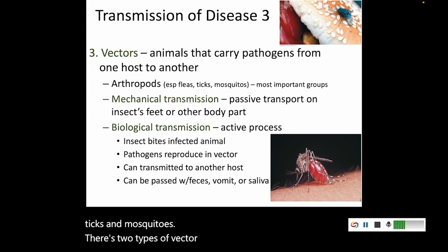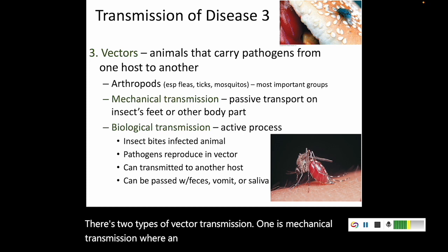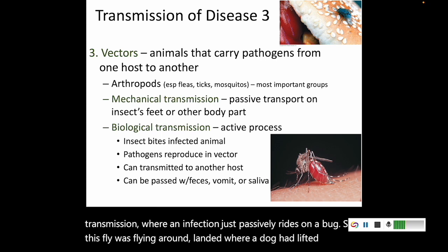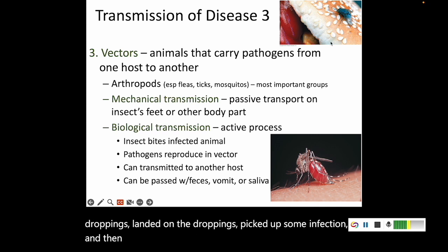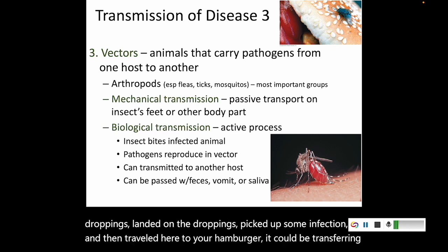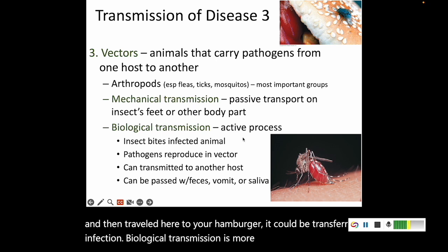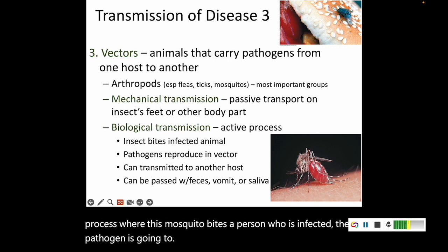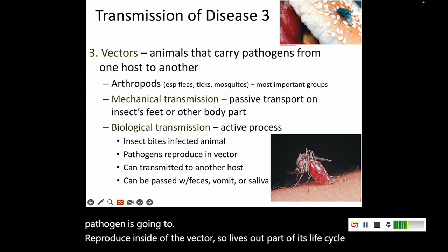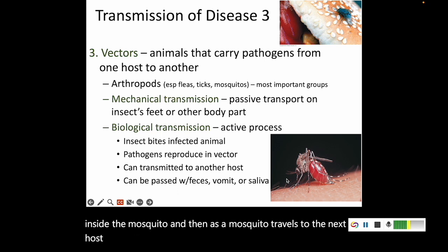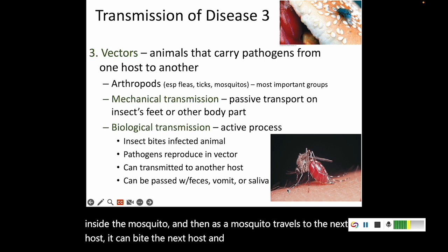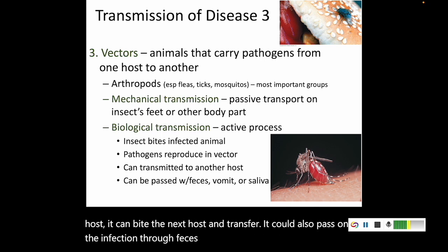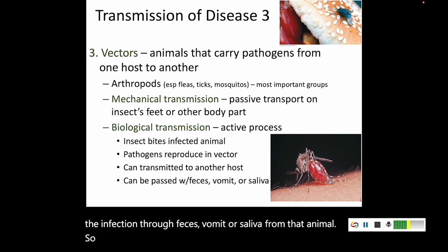There are two types of vector transmission. Mechanical transmission is where an infection passively rides on a bug — a fly lands on dog droppings, picks up an infection, then lands on your hamburger and transfers that infection. Biological transmission is a more active process — a mosquito bites an infected person, the pathogen reproduces inside the vector and lives out part of its life cycle inside the mosquito, then as the mosquito travels to the next host, it bites them and transfers the pathogen. West Nile and malaria are examples — an insect bite transfers the pathogen to you.